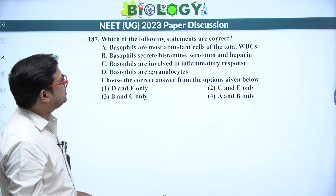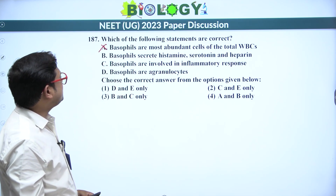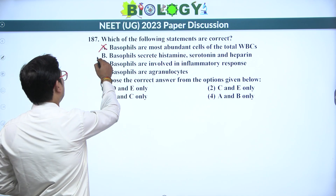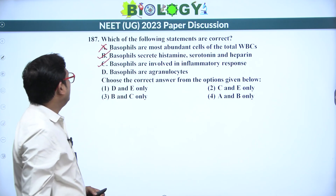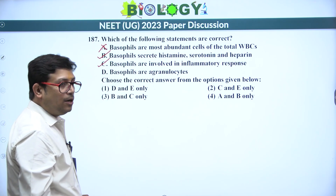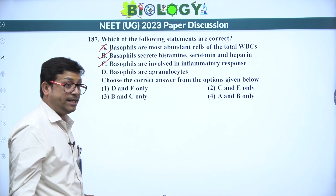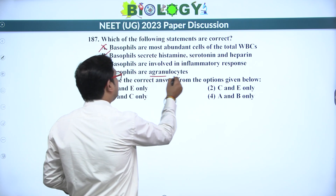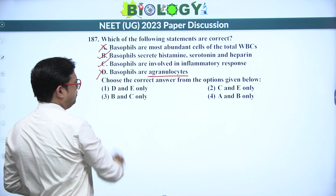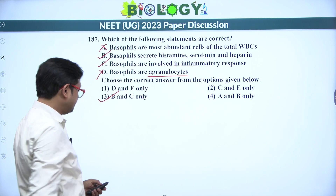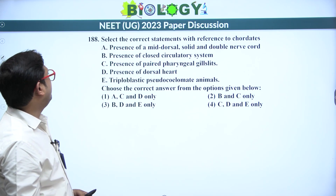Next: which statements are correct about basophils? Basophils are not the most abundant WBCs — that is neutrophils. Basophils secrete histamine, serotonin, and heparin — true. Basophils are involved in inflammatory responses due to histamine and serotonin — true. Basophils are granulocytes (agranulocytes are lymphocytes and monocytes) — so the statement that basophils are agranulocytes is wrong. Correct statements are B and C — answer is 3.